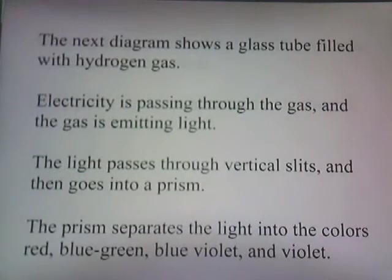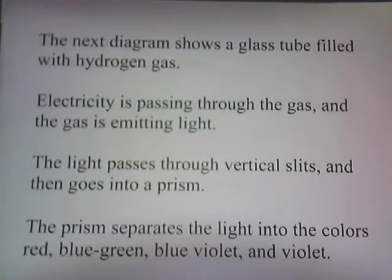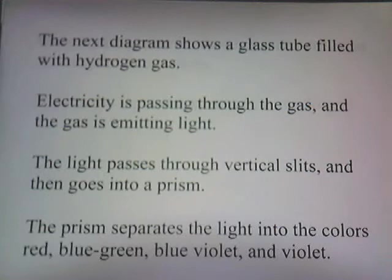The next diagram shows a glass tube filled with hydrogen gas. Electricity is passing through the gas, and the gas is emitting light. The light then passes through vertical slits and then goes into a prism. The prism separates the light into colors: red, blue-green, blue-violet, and violet.